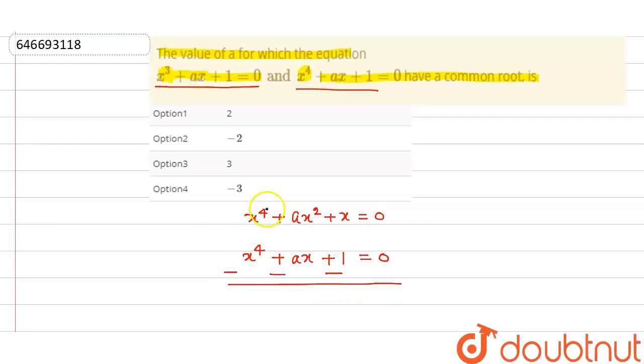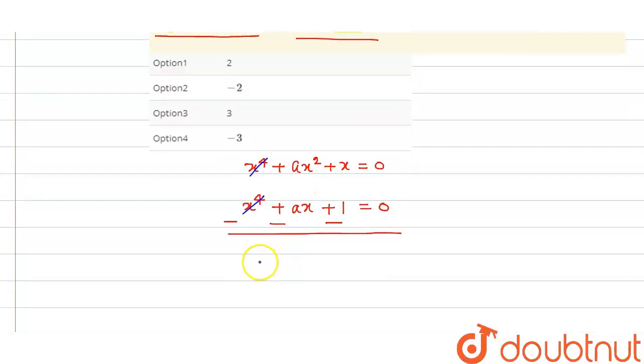So, it will be this thing will be cancelled. Here we have ax square minus ax and here we have plus x minus 1 is equal to 0.